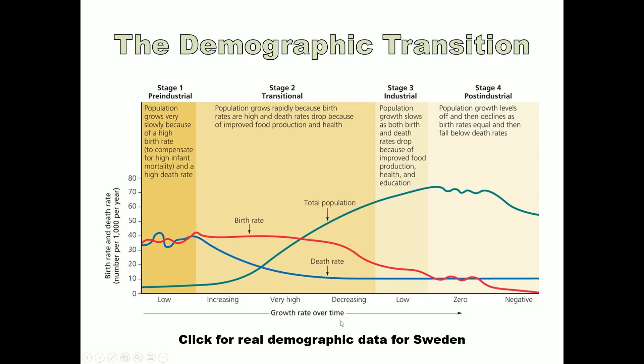When we hit Stage 3 — industrial — where we have a fully functioning industrial economy based on factory work and manufacturing, using a lot of machine labor and less agrarian farming, population growth begins to slow because birth rates drop to begin matching the death rate. You can see on this chart the red line representing birth rate starts to fall as we transition into an industrial economy.